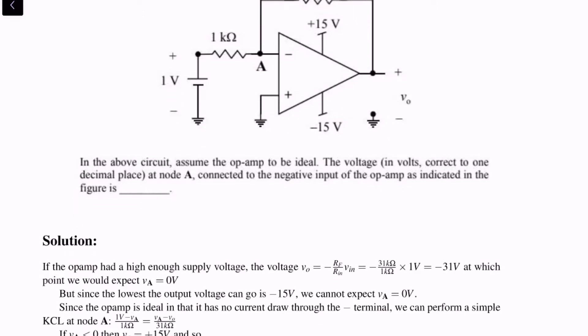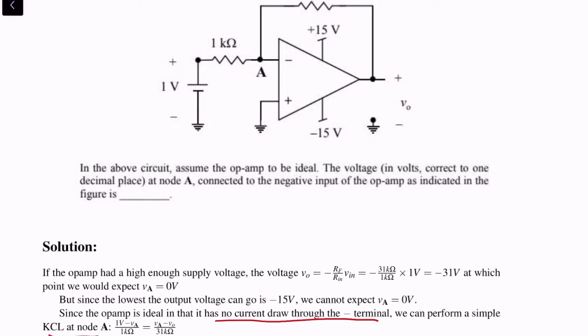Since the op-amp is ideal and has no current draw through the negative terminal, we can perform a simple KCL at node A and relate the expressions for the current through this resistor and the current through this resistor.